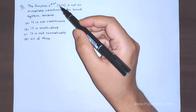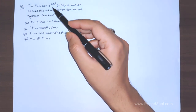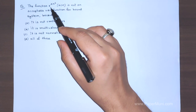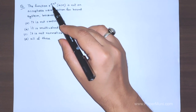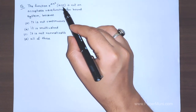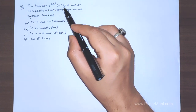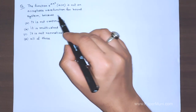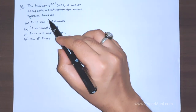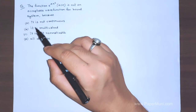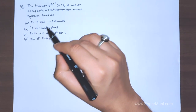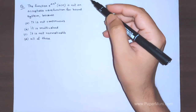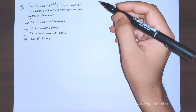The question says that the function e to the power αx², where α is a positive quantity, is not an acceptable wave function for a bound system. There are four options and we need to select one — it is a multiple choice question.